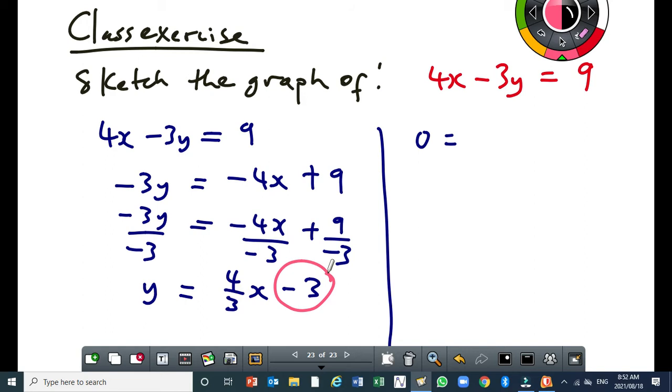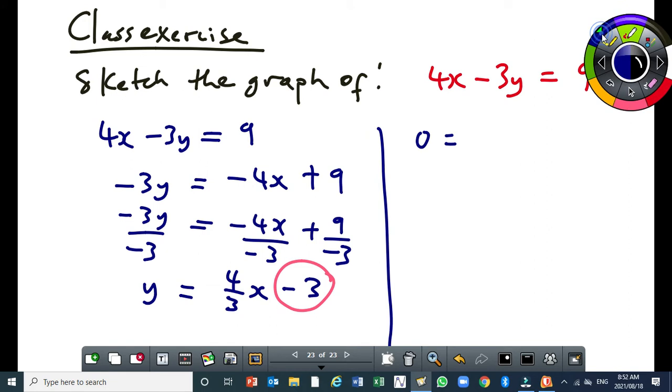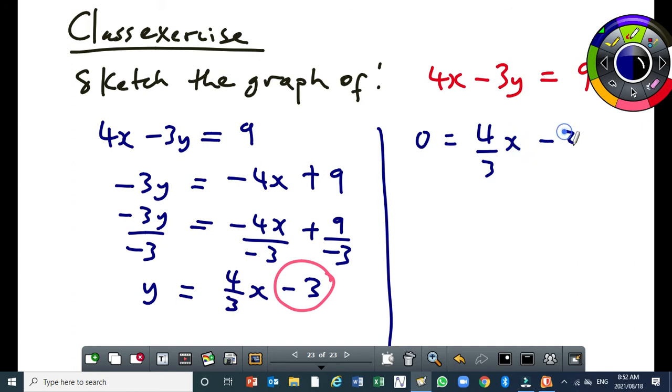So all you have to do is determine the x-intercept. To determine the x-intercept, you have to substitute y equal to 0. So you end up having, I'm using the general equation by the way, but you can substitute in the original. So that would be 0 equal to 4 over 3x minus 3.